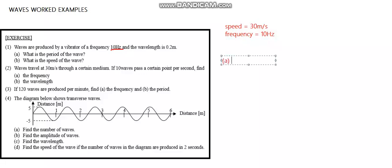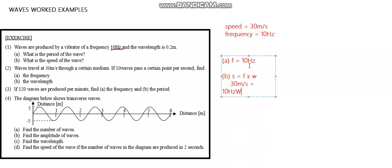For part A, frequency is equal to 10 hertz. Then for part B, we find the wavelength. We know that speed is equal to frequency times wavelength. We have speed at 30 meters per second and frequency at 10 hertz. Dividing both sides by 10, wavelength W will be equal to 3 meters. That's question 2.